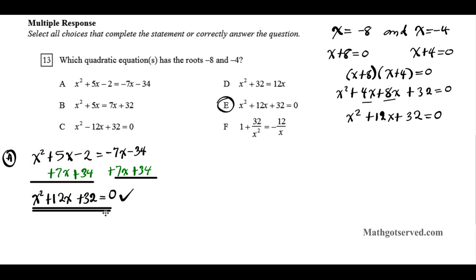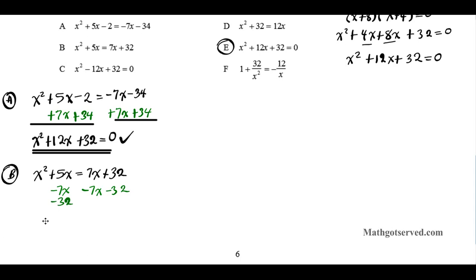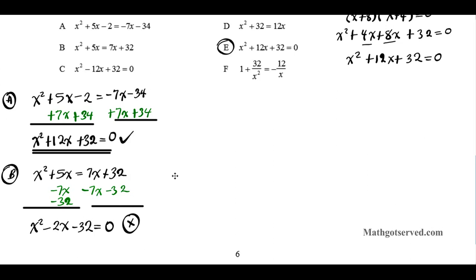Since the equations match, options A and E will have the same roots. Now let's look at option B: x squared plus 5x equals 7x plus 32. Putting it in standard form by subtracting 7x and 32 from both sides, we get x squared minus 2x minus 32 equals 0. This does not match, so option B does not have roots negative 4 and negative 8.